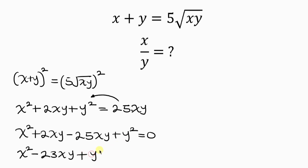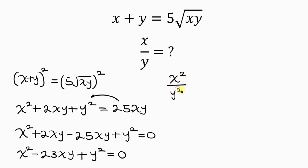Simplifying further, 2xy minus 25xy is negative 23xy, so we have x squared minus 23xy plus y squared equals 0. Notice that we're looking for x over y, so our next step will be to divide through by y squared. This expression becomes x squared divided by y squared minus 23xy divided by y squared.